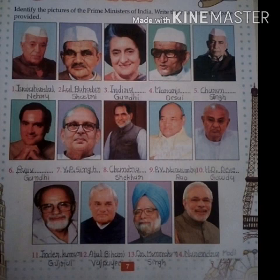Picture number 6 is Rajiv Gandhi. Rajiv Ratna Gandhi was an Indian politician who served as the sixth Prime Minister of India from 1984 to 1989. He took office after the death of his mother, Prime Minister Indira Gandhi. Rajiv Gandhi is the youngest Indian Prime Minister, taking office at the age of 40. So Rajiv Gandhi is our sixth Prime Minister of India.